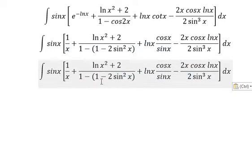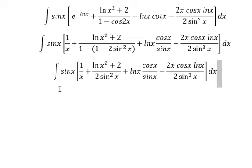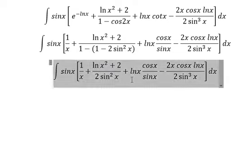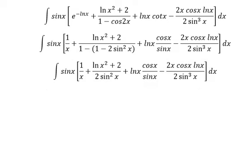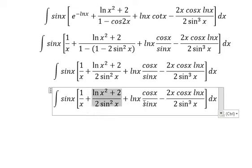Next, 1 minus 1 will cancel. Negative with negative gives us positive 2. Next, we multiply sinx on each of these terms to get the new expression.